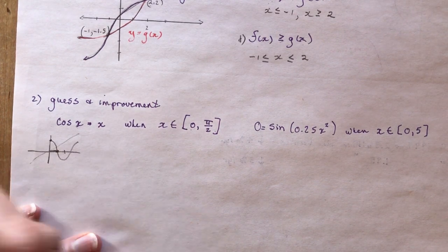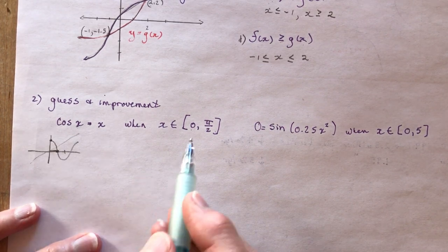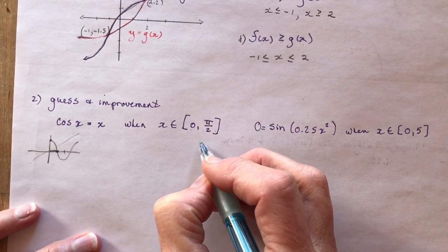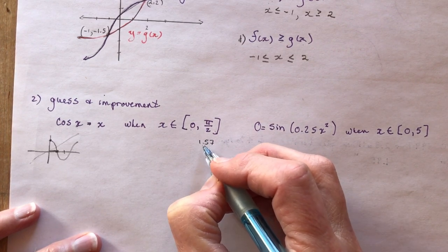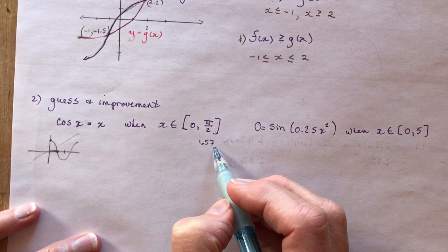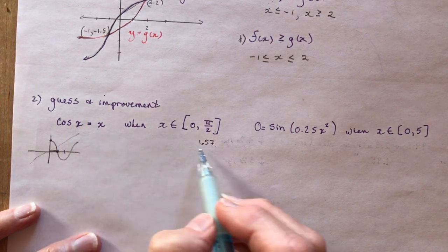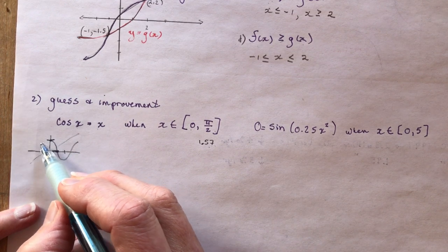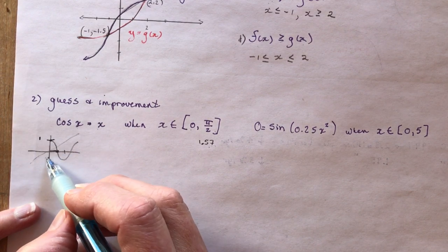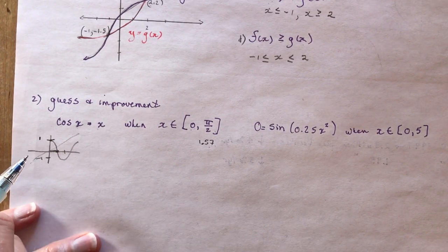You might start by making a guess. π/2 is approximately 1.57. If x equals 1.57, it would be way outside the range since cos only goes between +1 and -1. So we definitely want something less than 1.